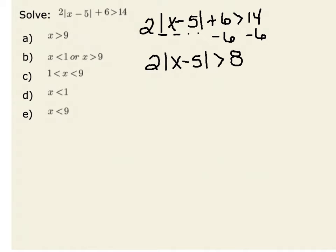Since I have 2 times the absolute value of x minus 5, and I want to isolate that absolute value sign, I'm going to divide both sides of my inequality by 2. I notice that 2 divided by 2 cancels to make 1. Therefore, I have the absolute value of x minus 5 is greater than 4.